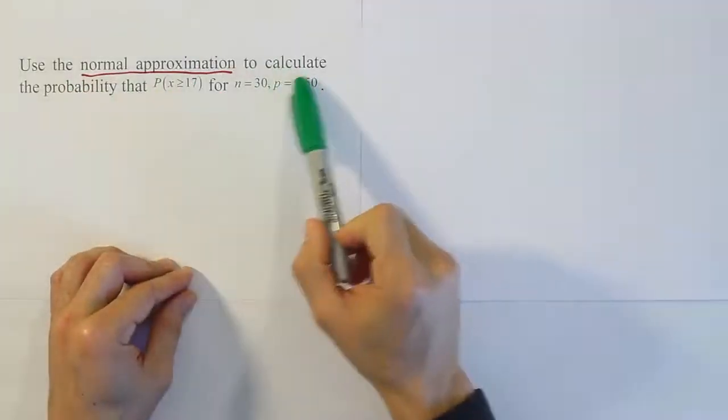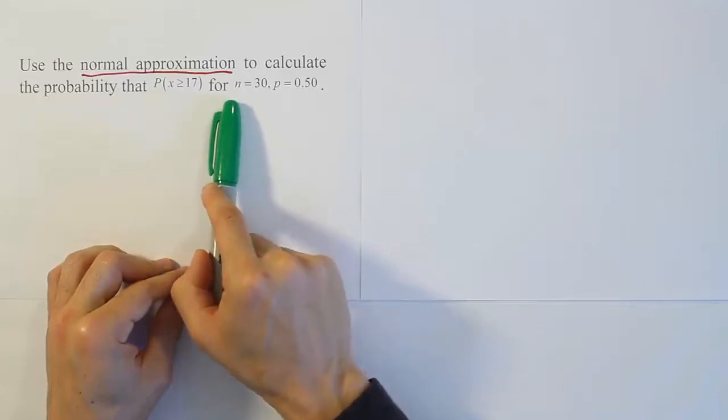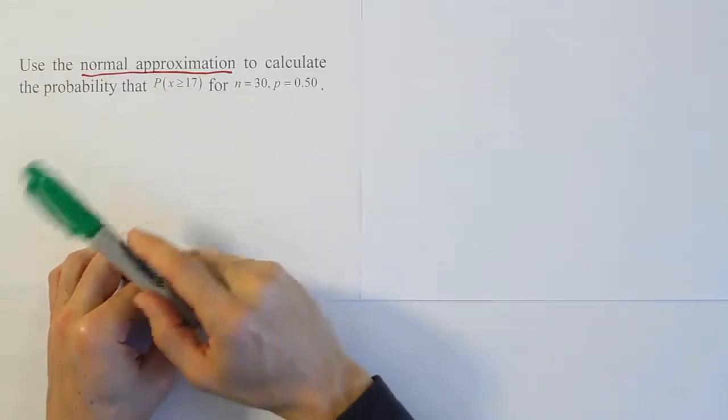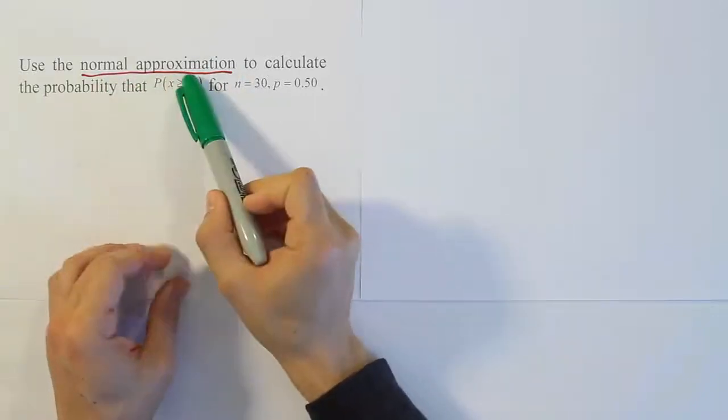Use the normal approximation to calculate the probability that x is greater than or equal to 17 for n equals 30 and p equals 0.5.